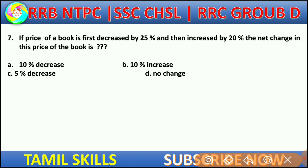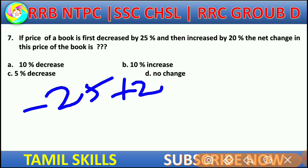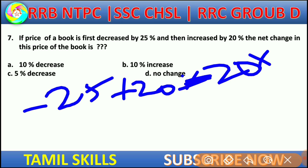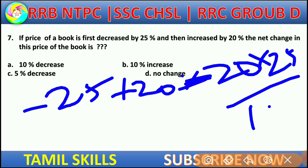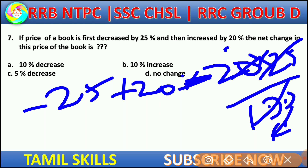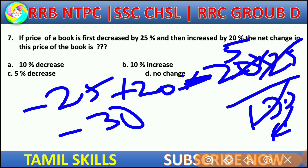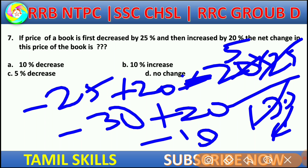Next problem: The price of a book is first decreased by 25%, then increased by 20%. So we use minus 25 and plus 20. Applying the formula: minus 25 plus 20 minus (25 × 20) by 100 gives minus 5 minus 5, so minus 10. The net result is a decrease of 10%.